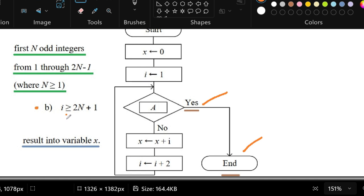And it turns out that letter B tells us that exact condition, which is if i is greater than or equal to 2N plus 1. We can see that there's a 2N here and there's also a 2N here.